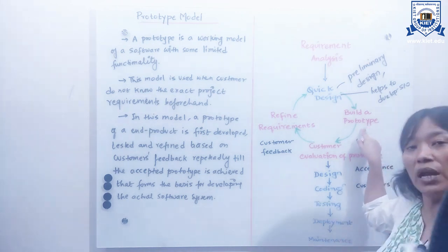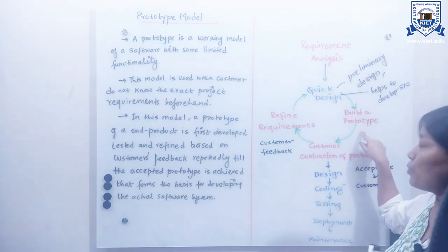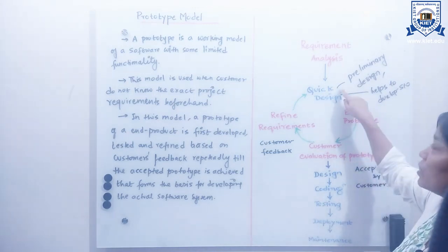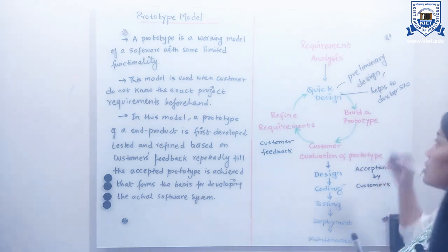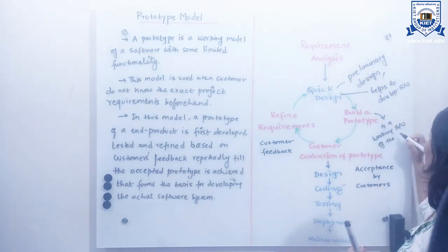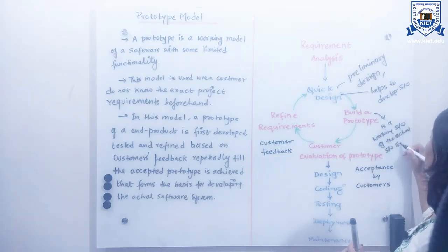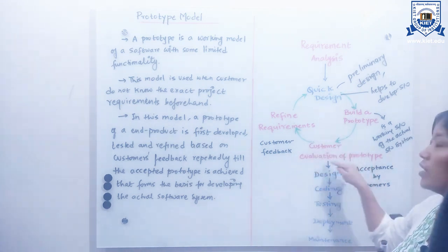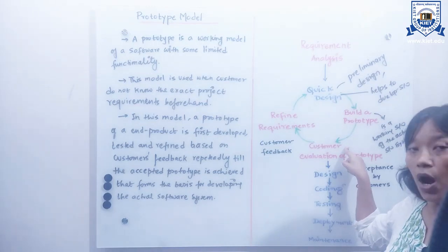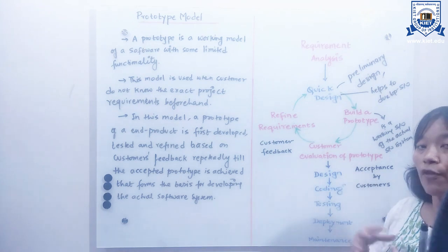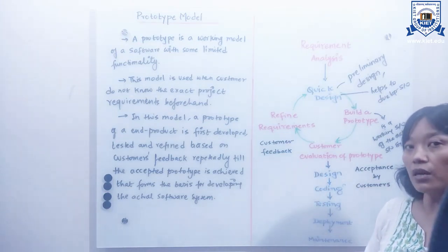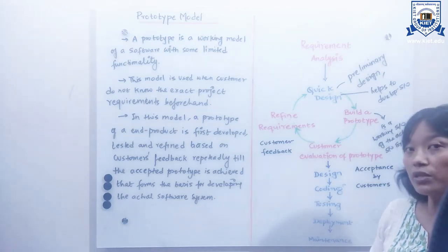The next phase is to build a prototype. In this phase, a prototype is actually designed based on the requirements gathered from the quick design. This is essentially a working prototype of the actual software system. The developed prototype is then shown or presented to the customer or stakeholders, and valuable feedback and suggestions are collected for enhancing the software system during the development process.